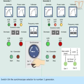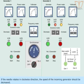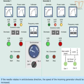Switch on the synchronoscope selector to number 2 generator. If the needle rotates in clockwise direction, the speed of the incoming generator should be decreased. If the needle rotates in anticlockwise direction, the speed of the incoming generator should be increased.